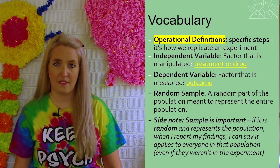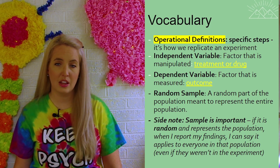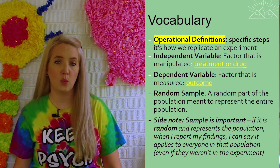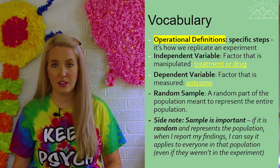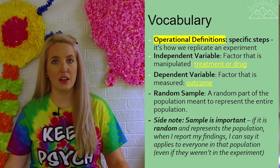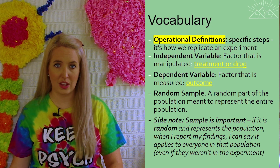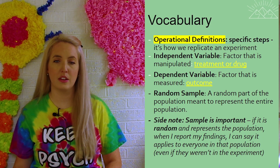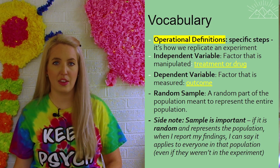Once we have operationalized our definitions, we talk about who is receiving the caffeine and who we're going to compare that to. Anybody receiving the caffeine is receiving what's known as the independent variable — the independent variable is what you are manipulating. I like to think of independent variable by its initials IV, because in a drug experiment you might get drugs through an IV. The dependent variable is the outcome — in our case, their heart rate — which is what we are measuring to see if there is a change at the end of our experiment.